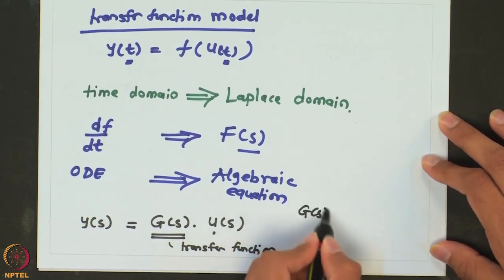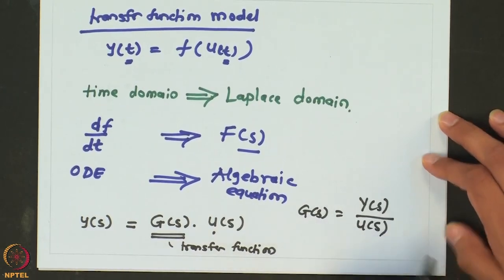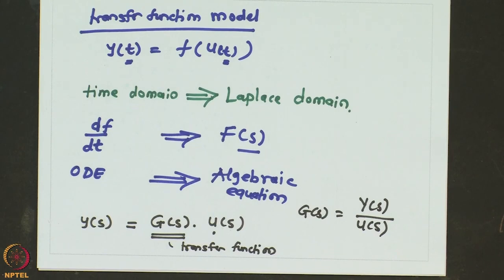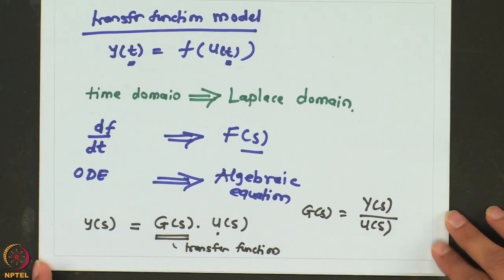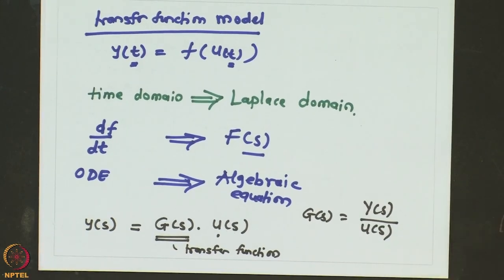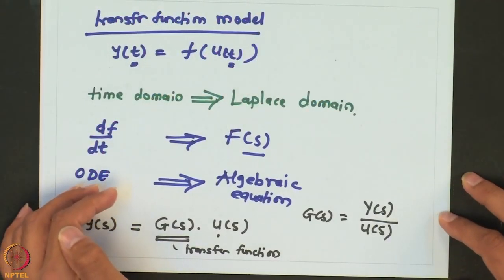We can write the transfer function for the process as Y(s) over U(s). It transfers the effect of input on the output in the Laplace domain, and the form of this transfer function gives us a lot of insights about the process dynamics. We will also be using this transfer function model for designing a control system. The advantage of using the transfer function model is that it simplifies the analysis by converting differential equations into algebraic equations.